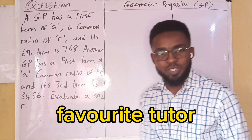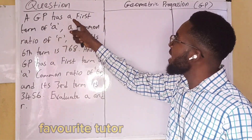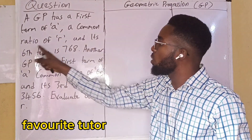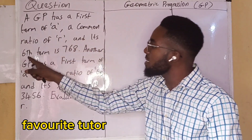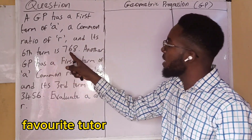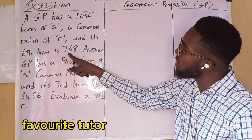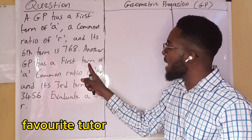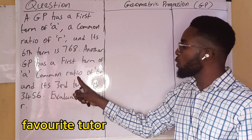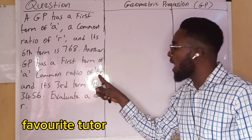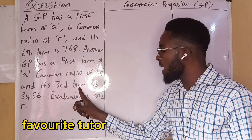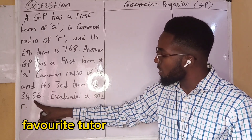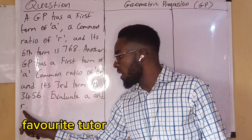Let's go through this question and then solve. A GP has a first term of A, a common ratio of R, and its sixth term is 768. Another GP has a first term of A, a common ratio of 6R, and its third term is 3456. This evaluates A and R.